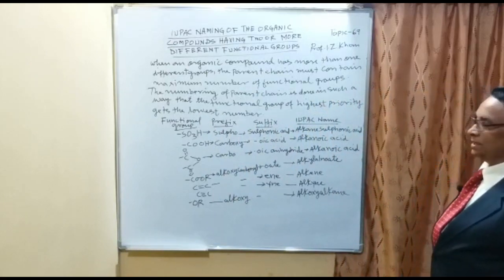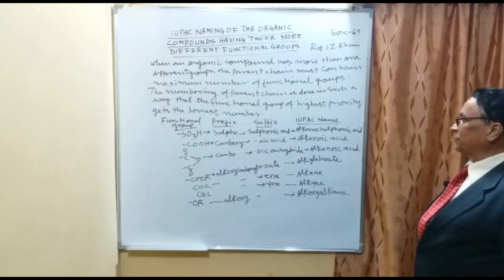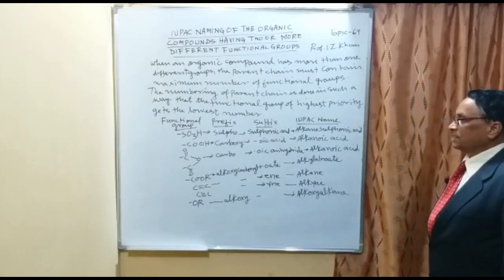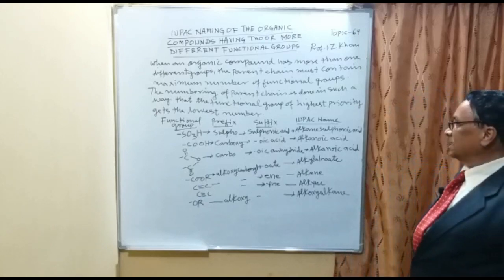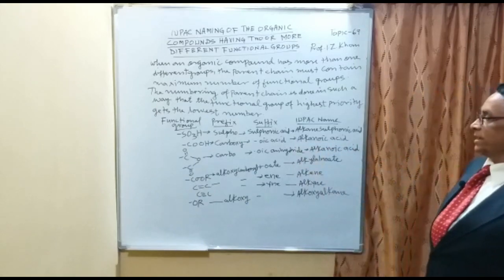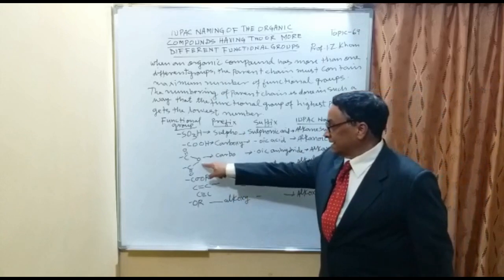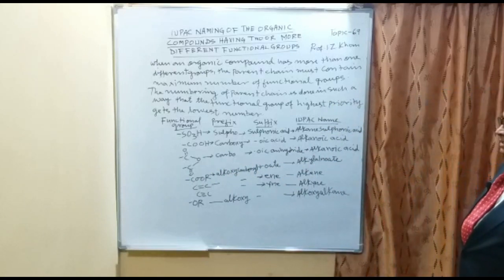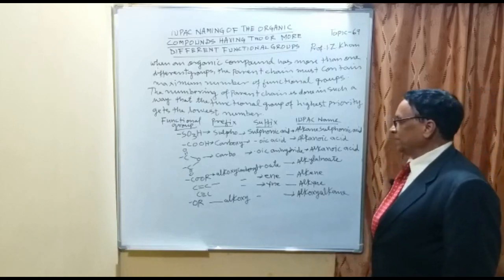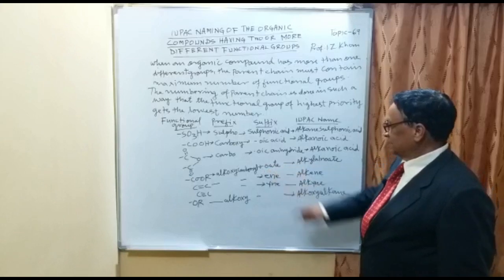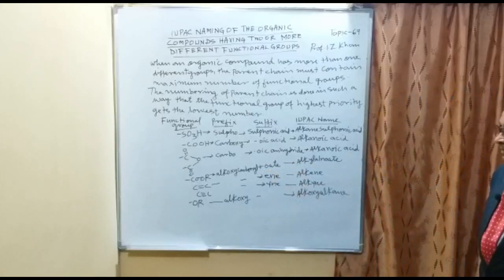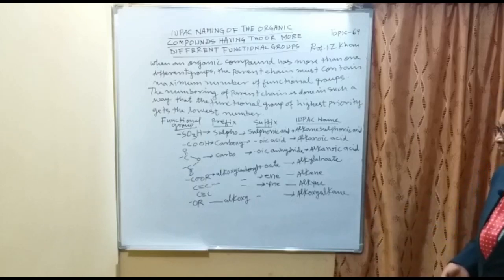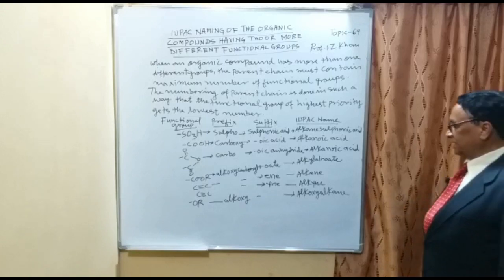For example, SO3H is known as 'sulfo' and the suffix is 'sulfonic acid,' so the IUPAC name will be alkyl sulfonic acid. COOH has the suffix 'oic acid,' giving alkenoic acid. The anhydride form is 'oic anhydride.' COR is the ester group, named as 'alkoxycarbonyl' with the suffix '-ate,' giving alkyl alkanoate. OR is the alkoxy group, giving alkoxyalkane.